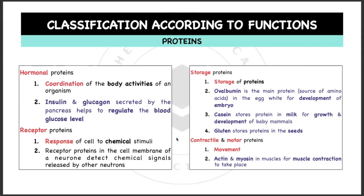Hormonal proteins are important in coordination of the body activities of an organism. Examples would be insulin and glucagon. You'll learn more about this in Semester 2. They are secreted by the pancreas to regulate the blood glucose level. Receptor proteins for the response of cell to chemical stimuli. Storage proteins to store the proteins. You have the ovalbumin which is the main protein in the egg white for development of embryo, casein which stores the protein in milk for growth and development of baby mammals, and gluten which stores protein in the seeds.